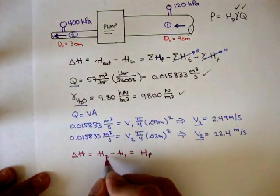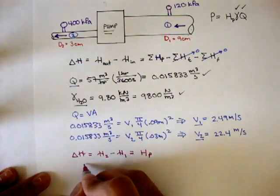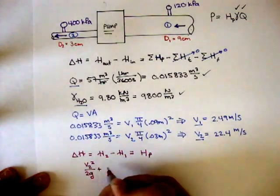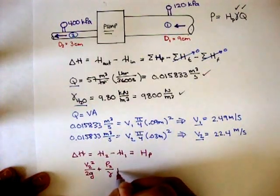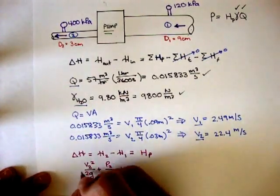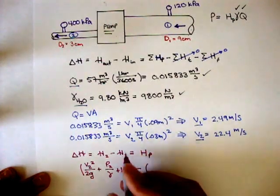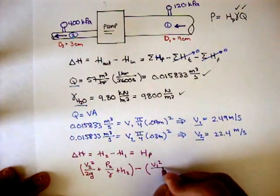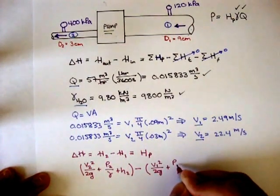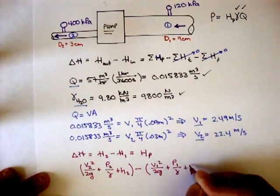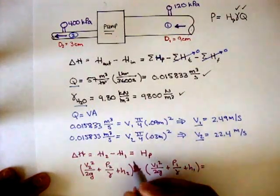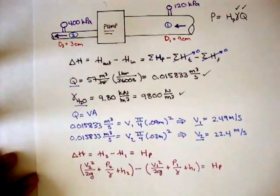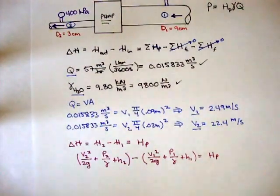Now, H of 2, or the total energy head at 2, is going to be V2 squared over 2G plus the pressure at 2 over gamma plus the height at 2. That's H2 minus the total energy head at 1, which is V of 1 squared over 2G plus pressure at 1 over gamma plus height of 1. And all that's going to be equal to the head pump, or the pump head.